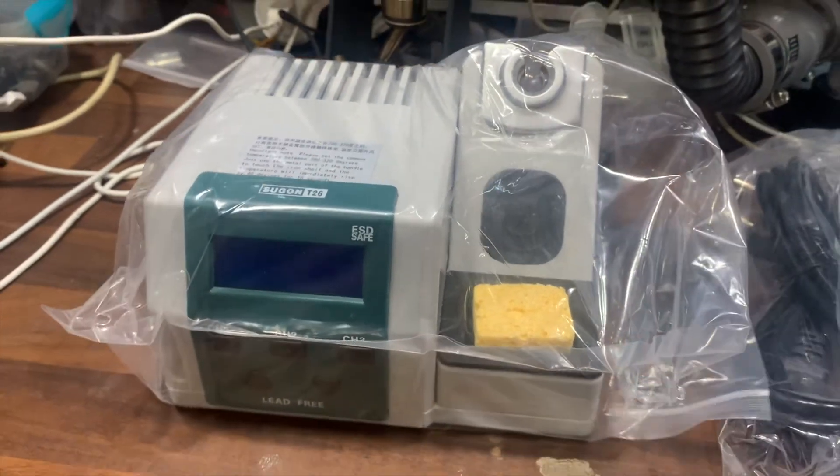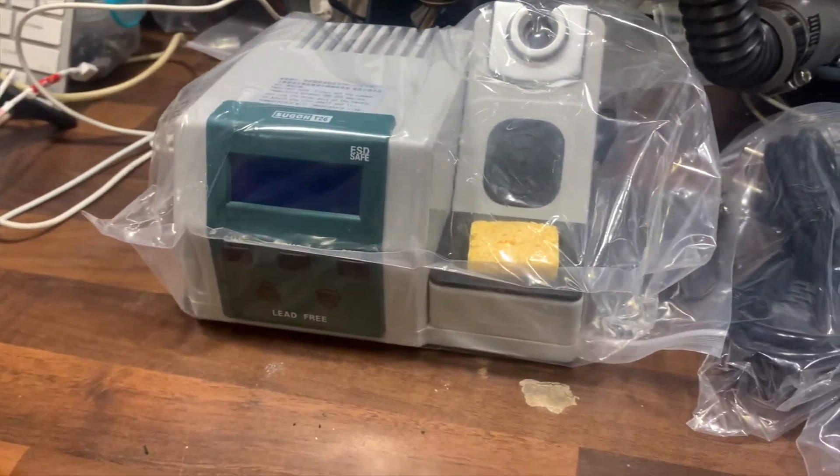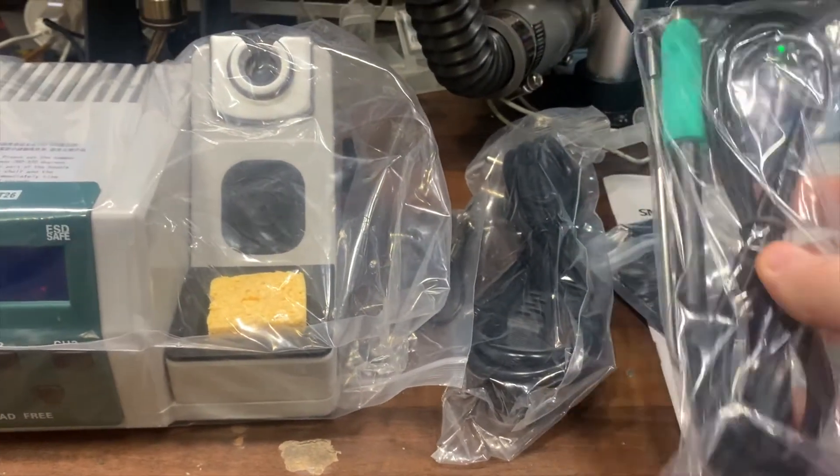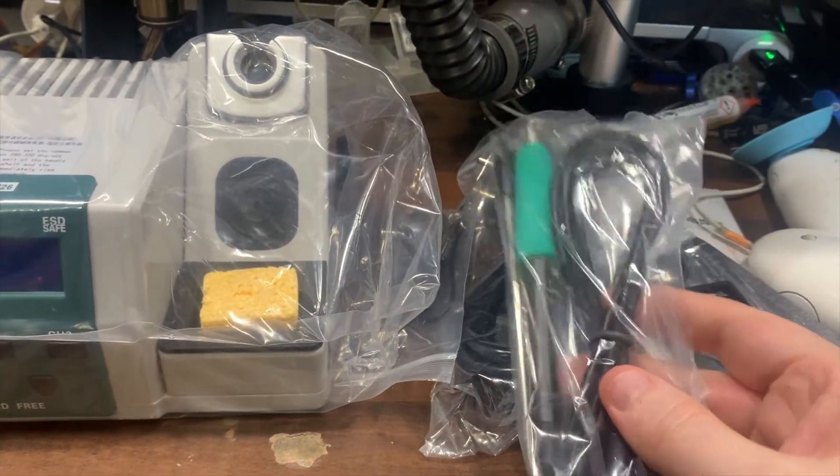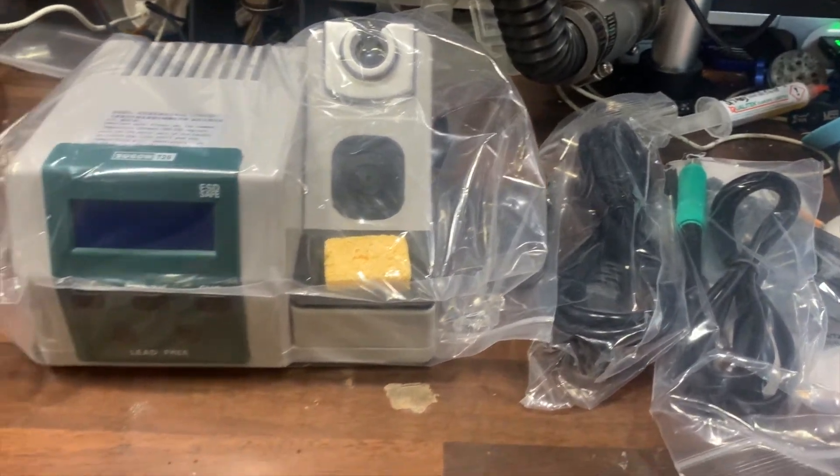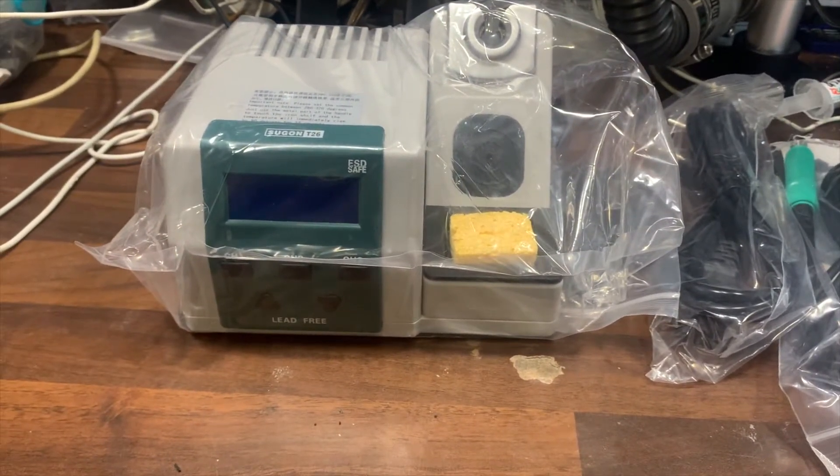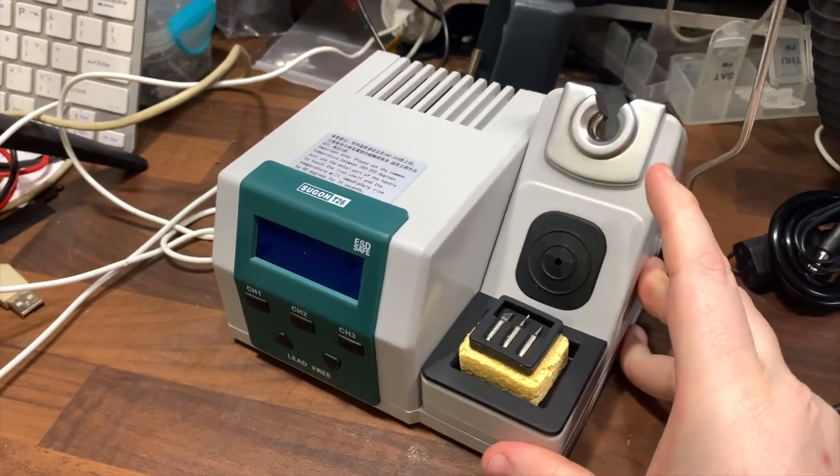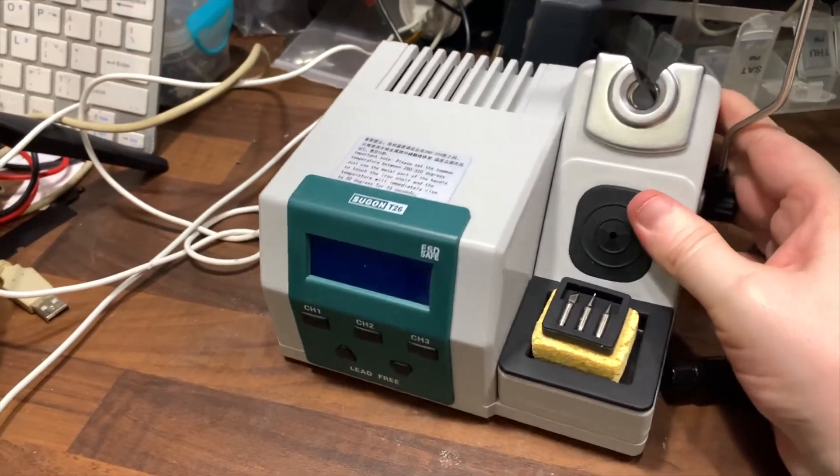This is actually an older model soldering station, been around for some time now. As you can see it takes the T210 soldering iron handle which allows you to use the C210 soldering tips made by JBC. It's basically a clone of the JBC soldering station I showed you a minute ago.